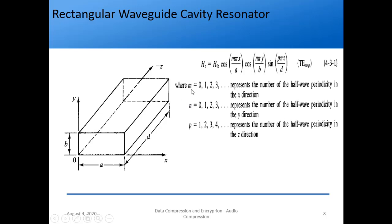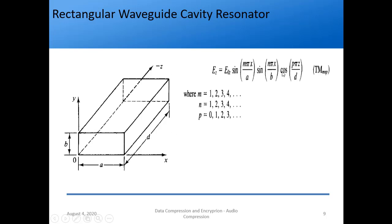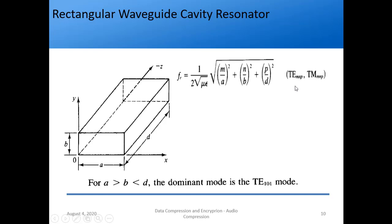For the TEMNP mode, M and N go from 0, 1, 2, 3... while P goes from 1 because if P were 0 the field would go to zero. For the TM (E field) mode it is sine-sine-cosine, so M and N go from 1 while P goes from 0. The resonant frequency is: FR = 1/(2√με) · √[(M/A)² + (N/B)² + (P/D)²], and it is the same formula for both TEMNP and TMNP modes. This resembles the rectangular waveguide formula with the added P/D term.